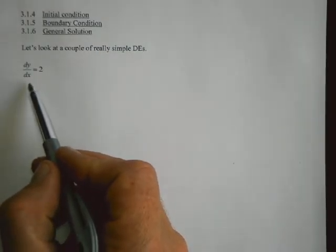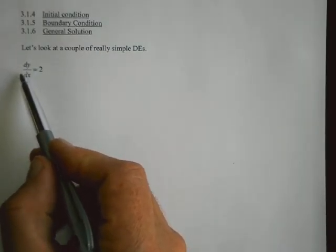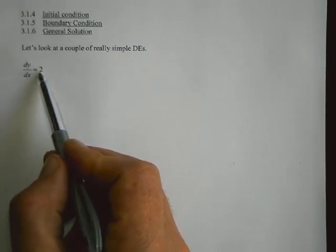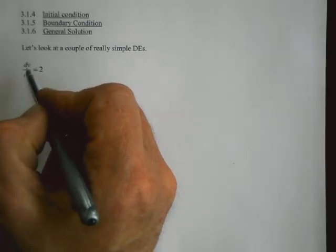So here all we're saying is that the slope is everywhere equal to 2, which is a straight line. If the slope is always equal to 2, let's just convince ourselves of that.